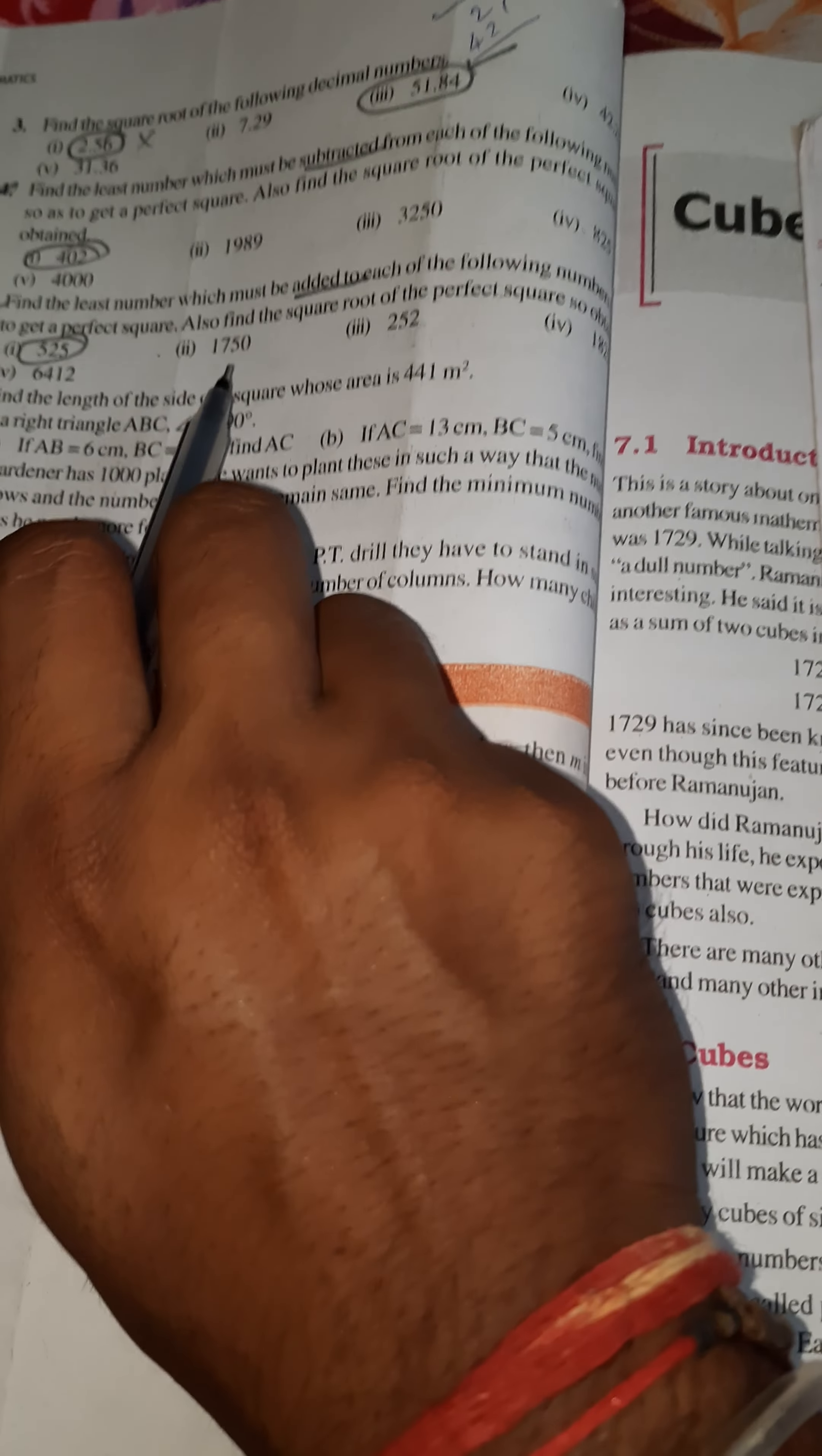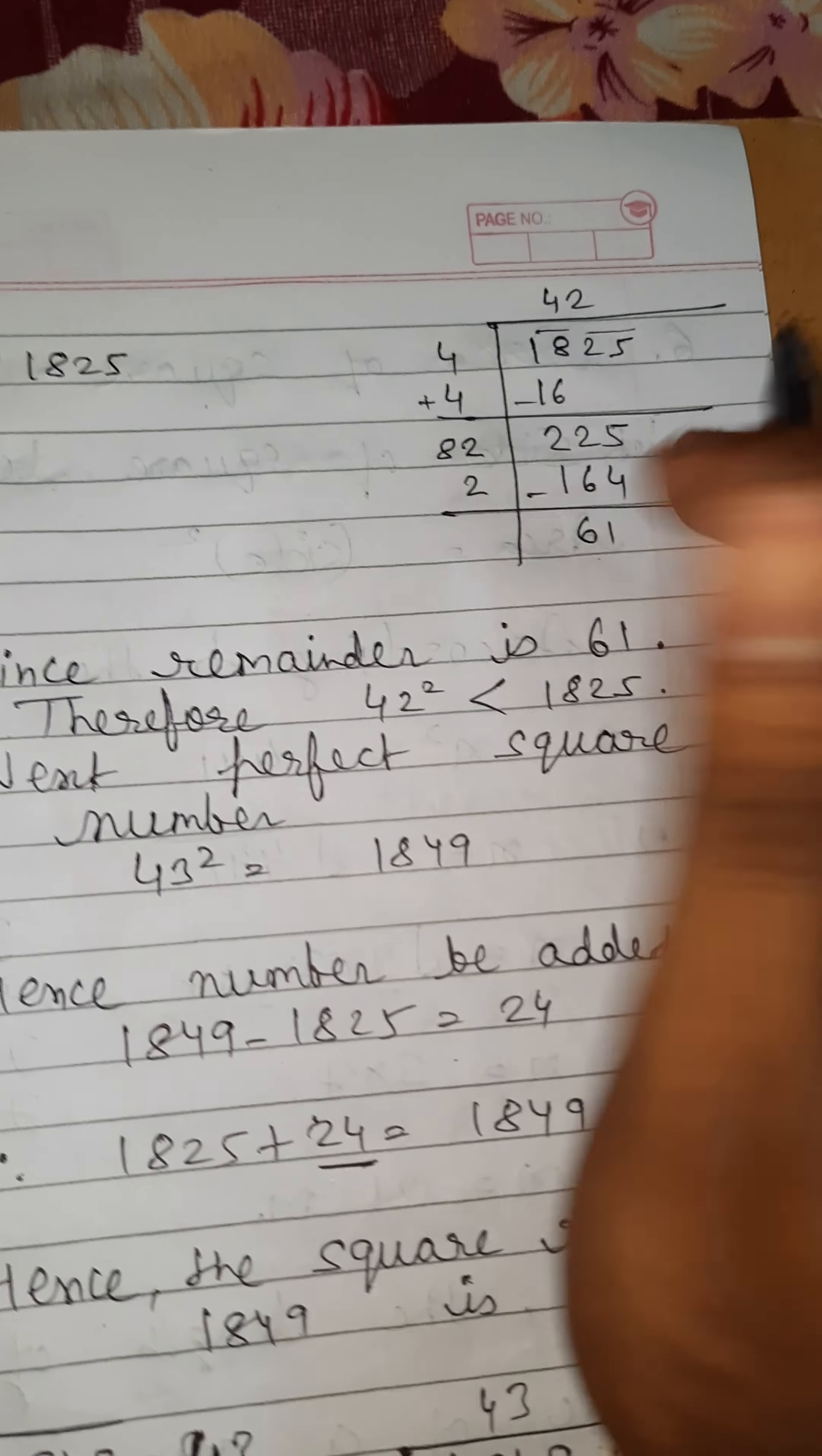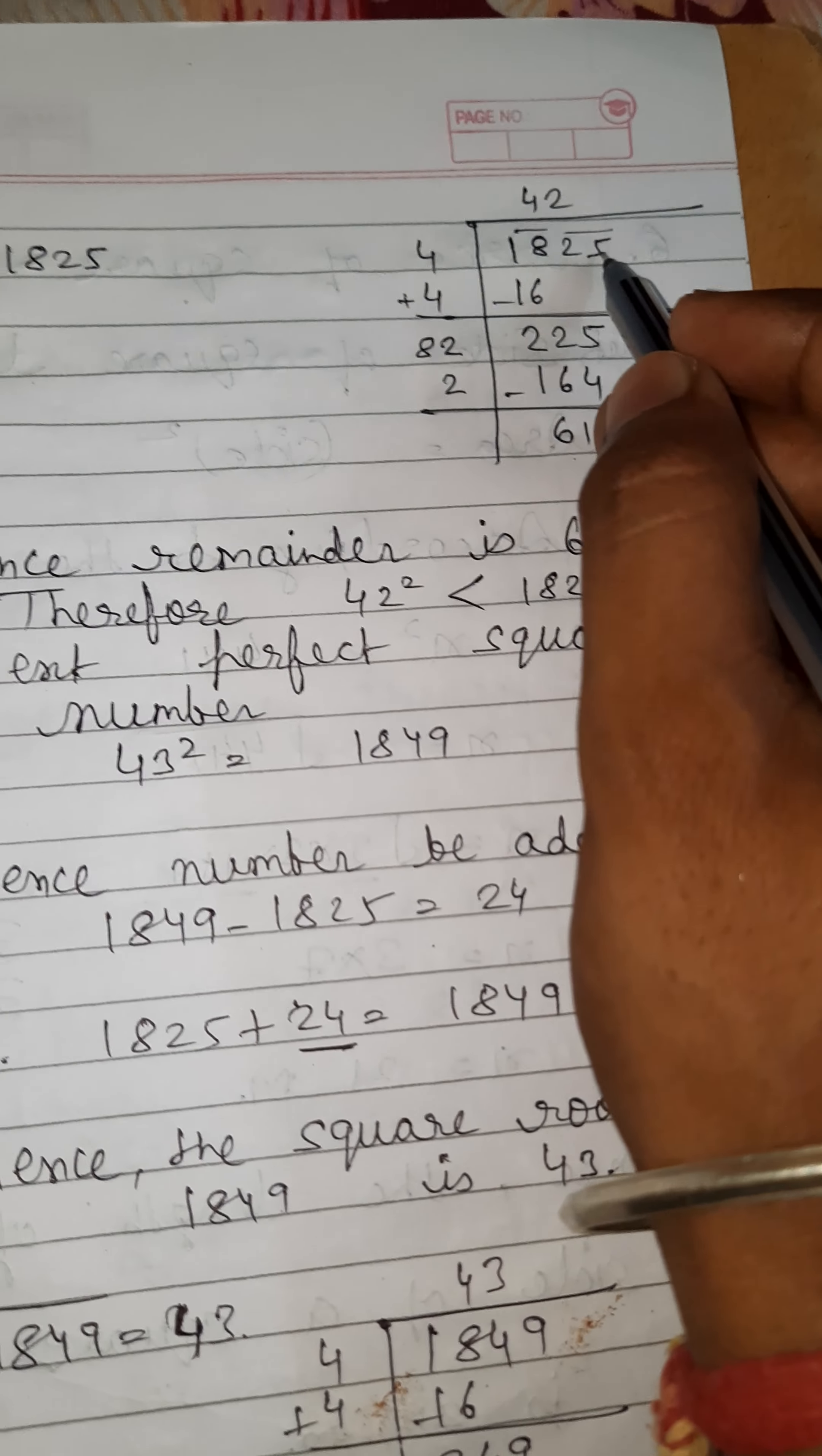Now the second number, 1825. First find the square root of 1825 by division method. Then 1825: the first pair is 18 and the second is 25.